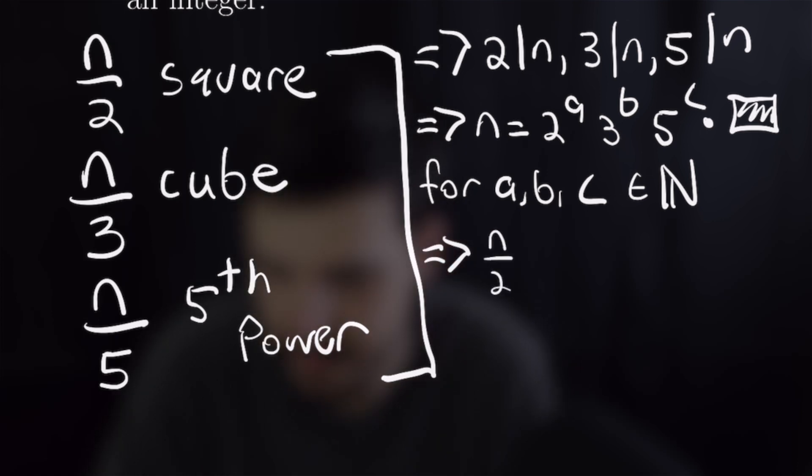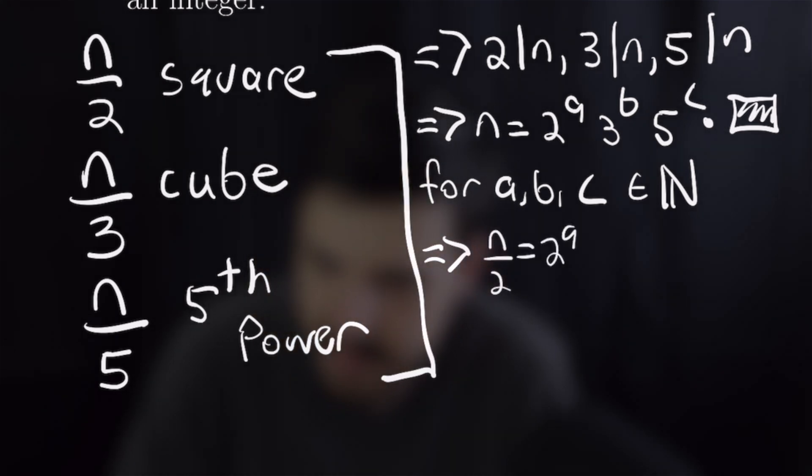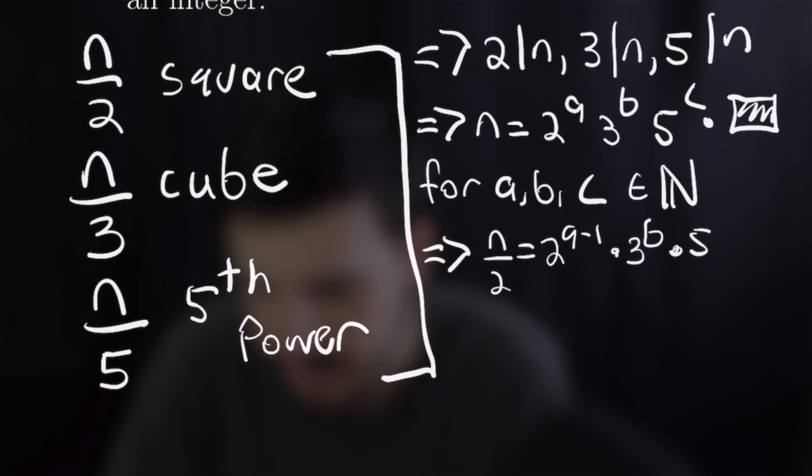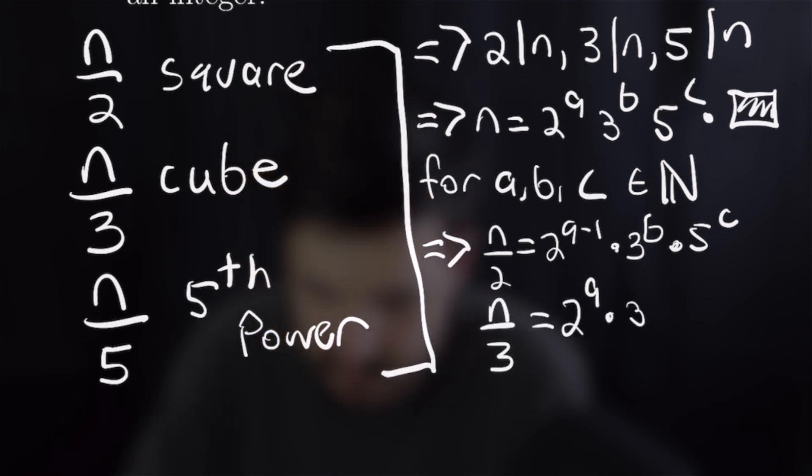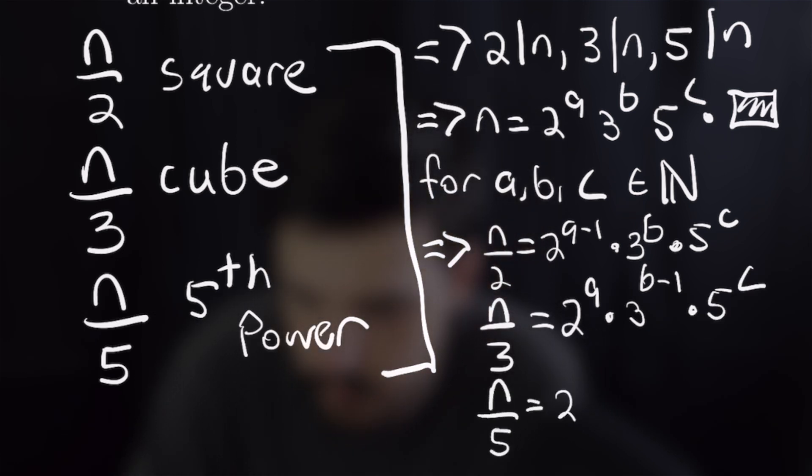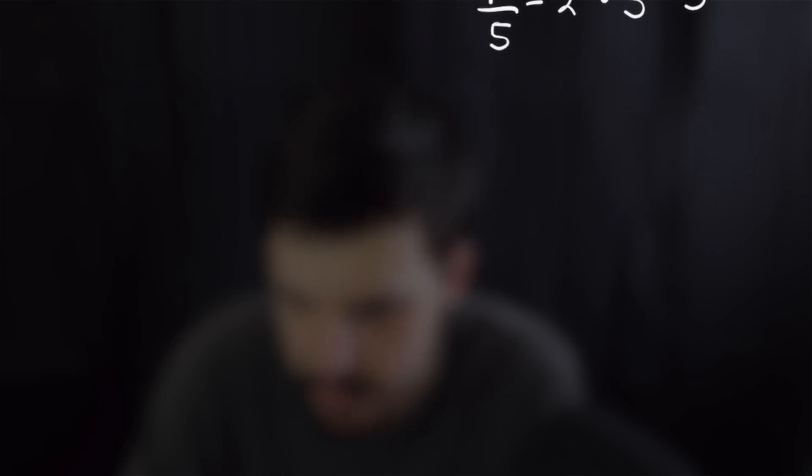That n over 2 is equal to 2 to the a minus 1 times 3 to the b times 5 to the c. N over 3 is equal to 2 to the a times 3 to the b minus 1 times 5 to the c. And lastly n over 5 is equal to 2 to the a times 3 to the b times 5 to the c minus 1.